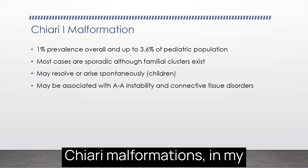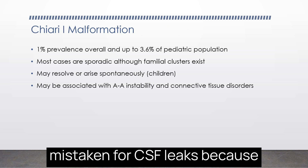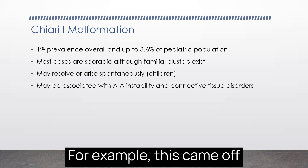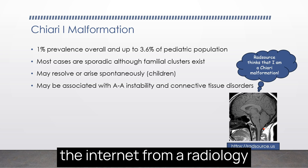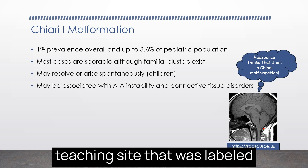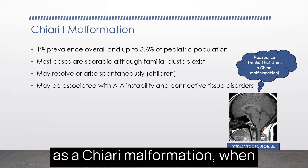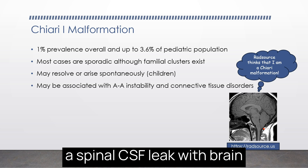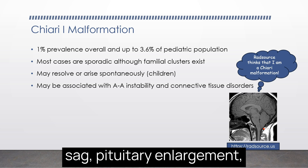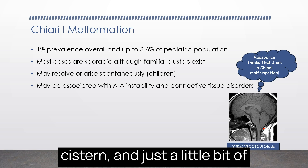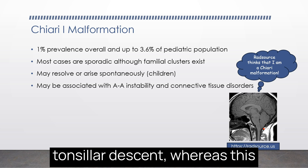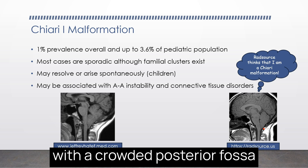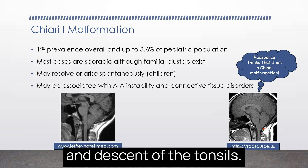Chiari malformations, in my opinion, are most commonly mistaken for CSF leaks because the imaging was read incorrectly. For example, an image from a radiology teaching site was labeled as a Chiari malformation when it was clearly the brain of a spinal CSF leak — showing brain sag, pituitary enlargement, narrowing of the prepontine cistern, and just a little bit of tonsillar descent. A real Chiari malformation shows a crowded posterior fossa and descent of the tonsils.